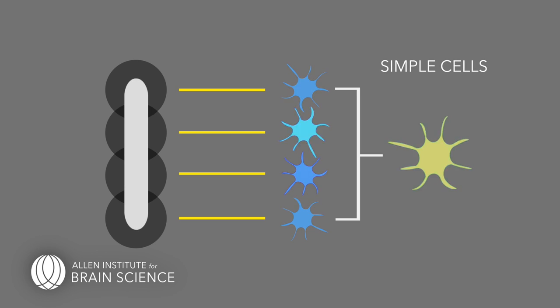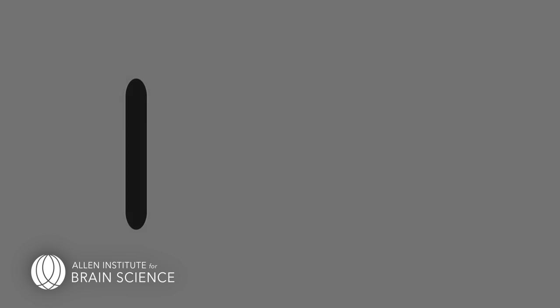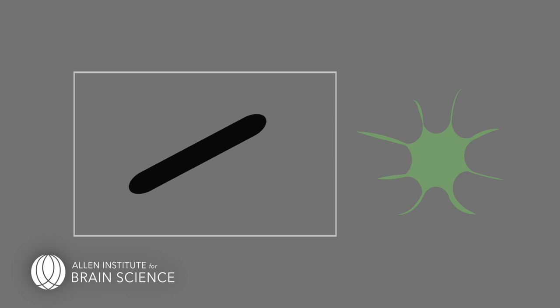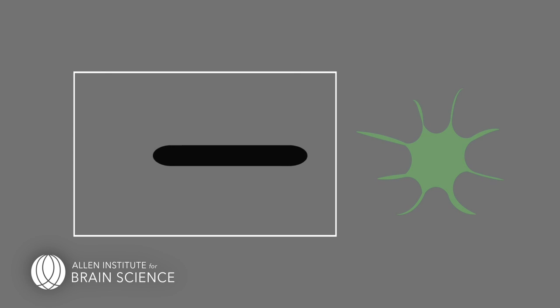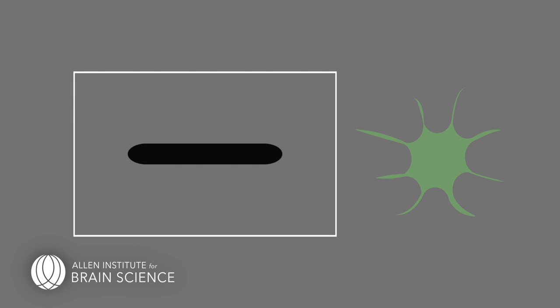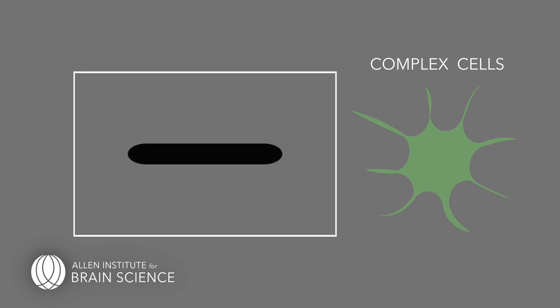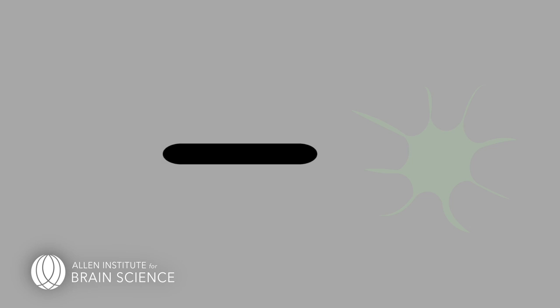These types of cells are called simple cells. There are also neurons in primary visual cortex that respond to lines and edges in a way that is invariant with respect to translations — movements from side to side or up and down, at least within a small window. These types of cells are called complex cells, and one hypothesis for how these cells arise is that they receive input from a set of simple cells.